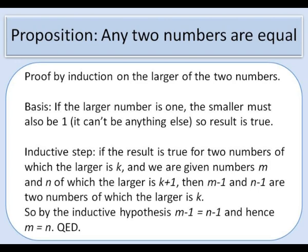Suppose now for the inductive step that if it's true that any two integers of which the larger is k must be equal then we can extend that to k+1. So suppose we have integers m and n where the larger is k+1. Then m-1 and n-1 are two numbers of which the larger is k. By the inductive hypothesis they must be equal and since m-1 equals n-1 then m equals n. So we've shown that any two numbers must be equal.